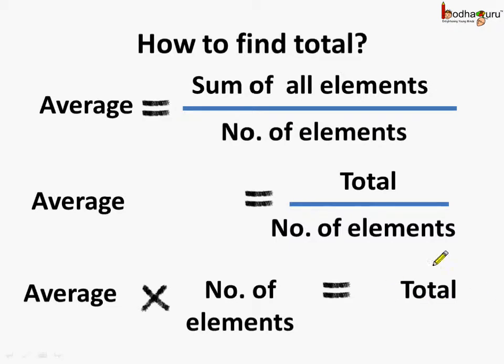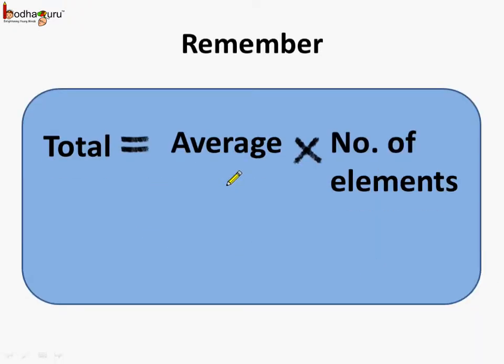Thus we can find the total if we know the average and the number of elements. Basically it is the product of average and the number of elements. So remember total equals average multiplied by number of elements.